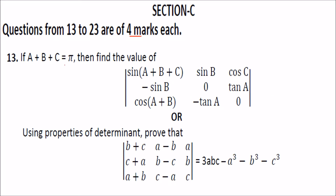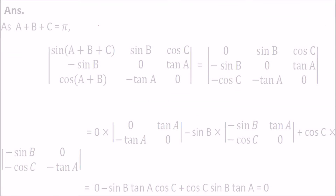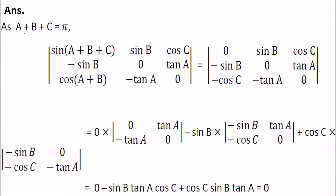So a plus b plus c is π. You have to find the value of this. See, a plus b plus c equal to π. You should know what sin(a+b) is when a+b equals π minus c, and what cos(π minus c) is. Since sin π is zero, we can replace accordingly.